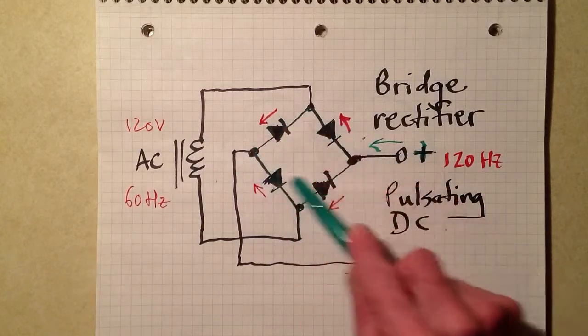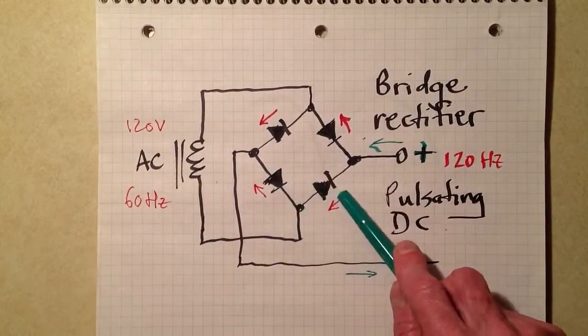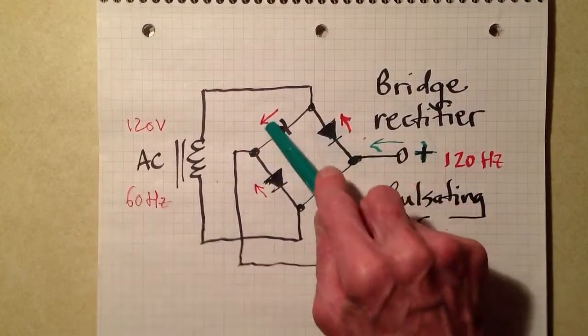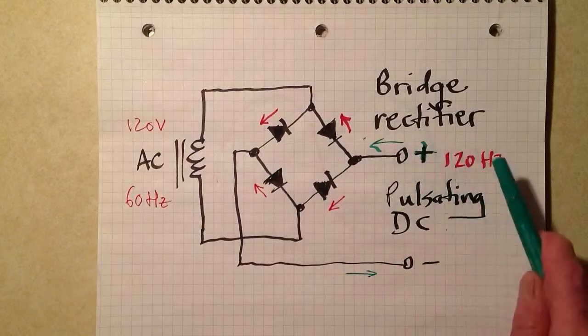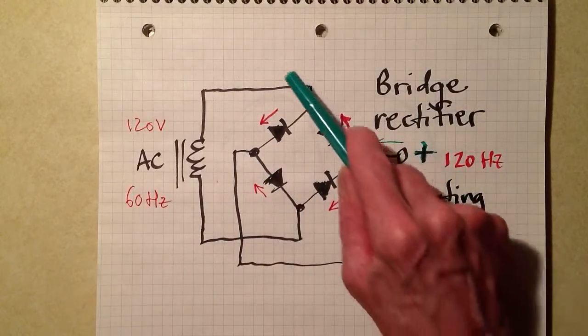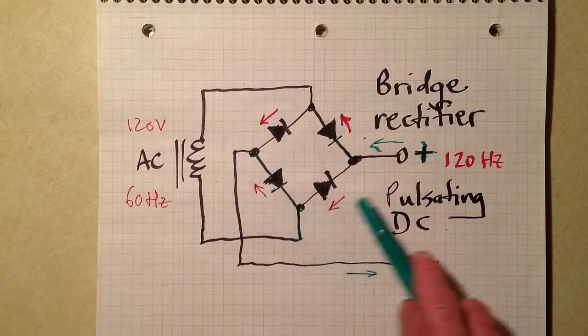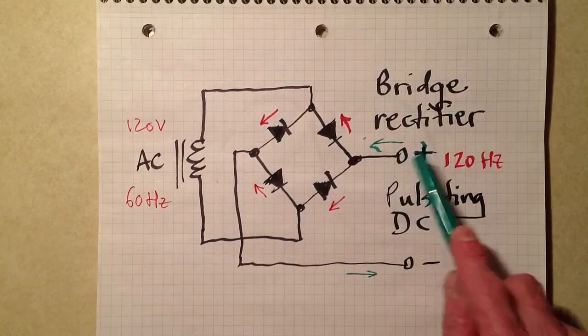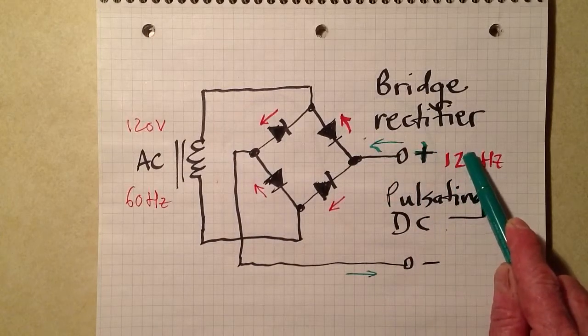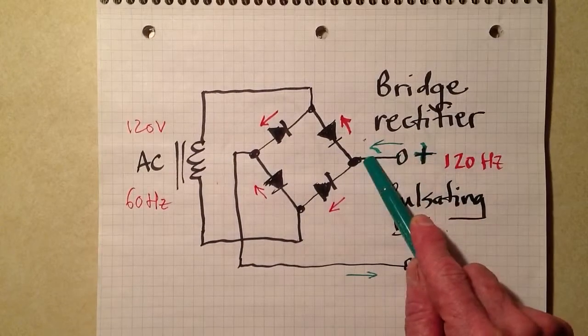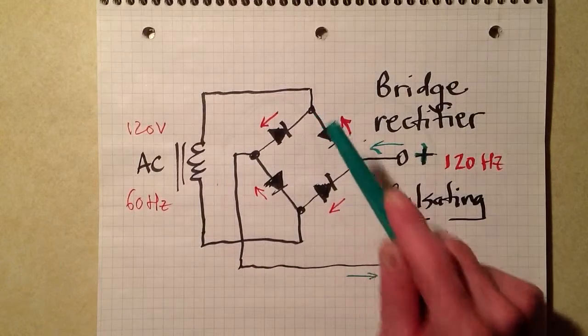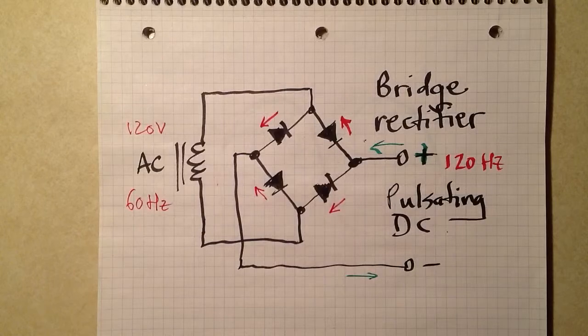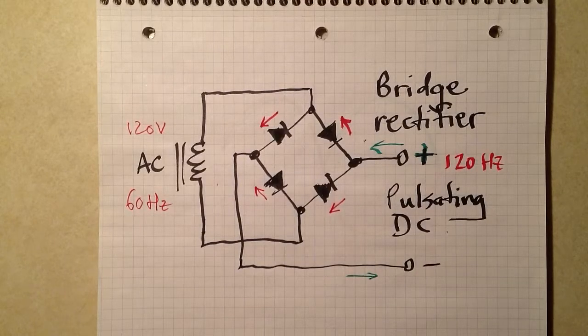But look very closely now at these four diodes and the way that they are arranged. Note the anodes, which are the arrows, and the cathodes, which are the little lines. Electrons can flow only against the arrow in a diode like this as it's drawn. So, electrons come out of the load into the positive terminal, and they can flow through either this diode or this diode, depending upon which part of the cycle we're talking about.